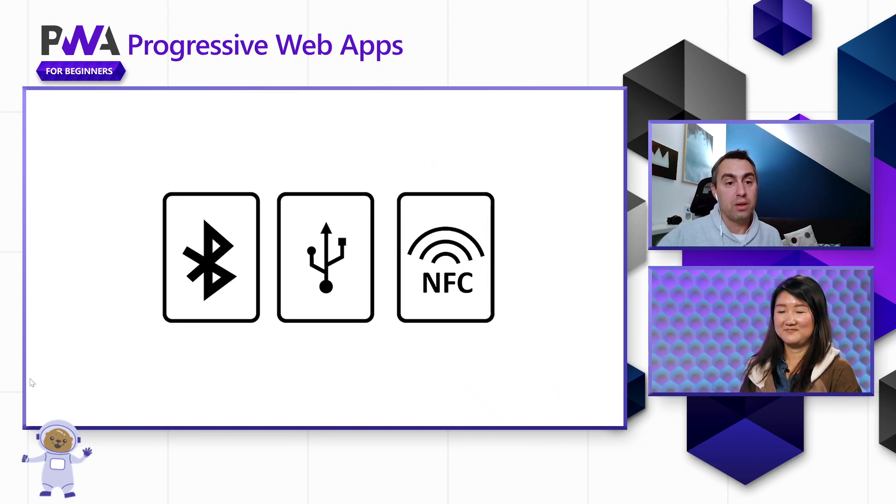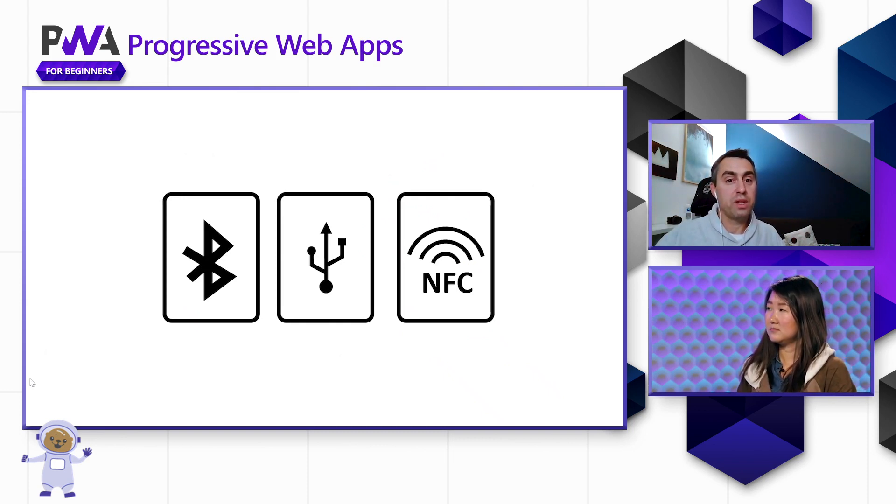Another area is hardware. The web can do things like Bluetooth, USB, and NFC, so you could create an app that really interfaces with other devices around where your app is installed. There's also Web Payment, which allows your application to process payment safely in a way users can trust because it's embedded in their browser. Another one is Web Authentication, which allows you to use things like Windows Hello face recognition or iOS fingerprint recognition to log the user into your app in a much more secure and trusted way.